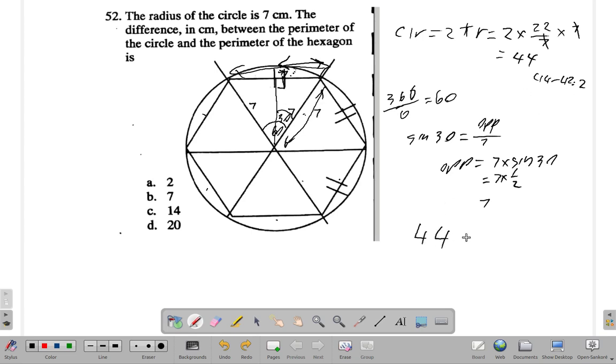So the circle minus the hexagon perimeter would be 2. So the answer here is A. Alright. So in this case, A is the answer.